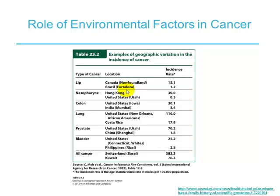If you look at people from Canada and Brazil, they develop a lot of lip cancer. People from Hong Kong have nasopharynx cancer. The United States has high rates of colon cancer, lung cancer, prostate cancer, and bladder cancer. The worst place to live for all cancers overall is Switzerland — they have a huge incidence of cancer.